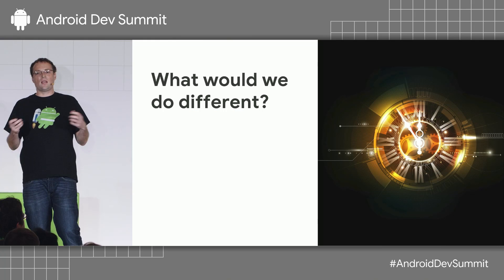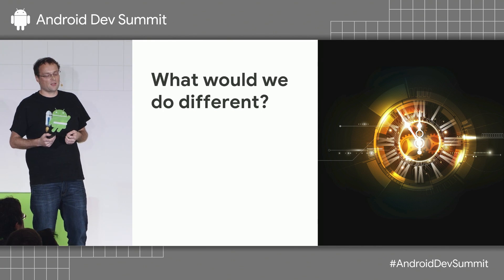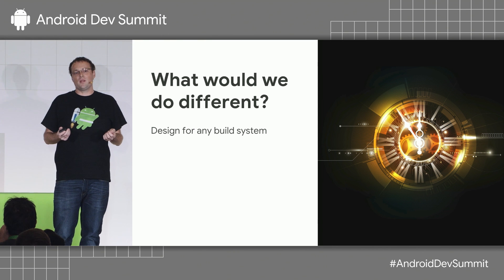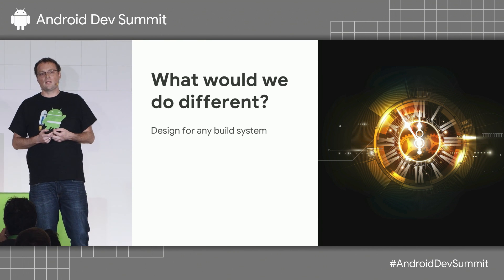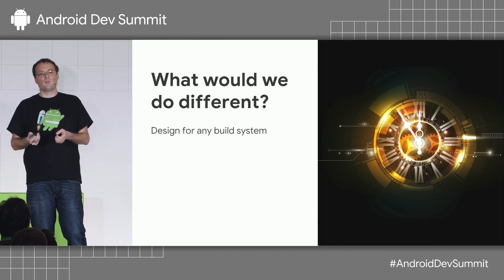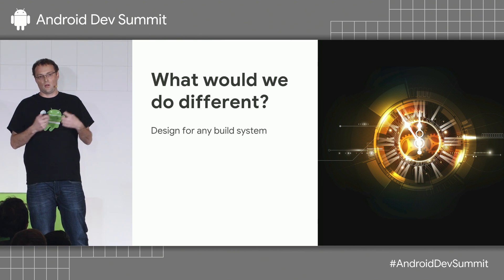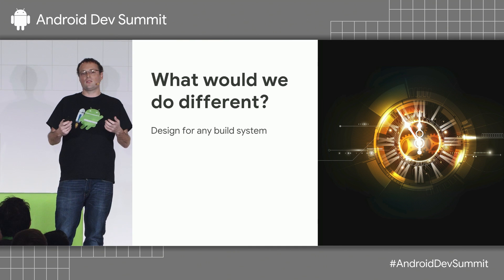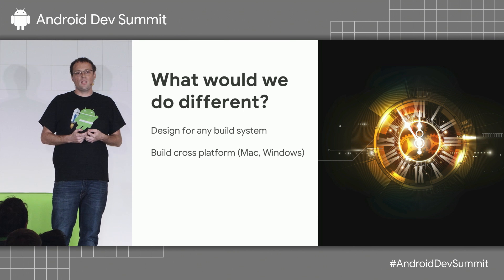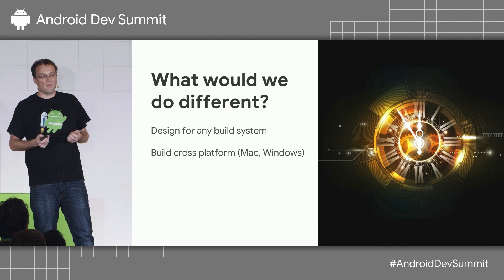Looking back at those seven years, what would we do differently? There are a couple of things. We would probably design for any build system. We made some key decisions very early on that tightly coupled us to Google's internal build system. It quickly became a problem because even at Google not everybody uses that build system, and we weren't able to share our host-side infrastructure with them, or with the community, and we couldn't open source it.